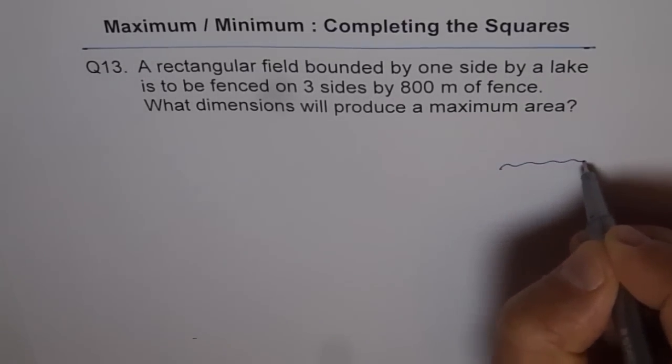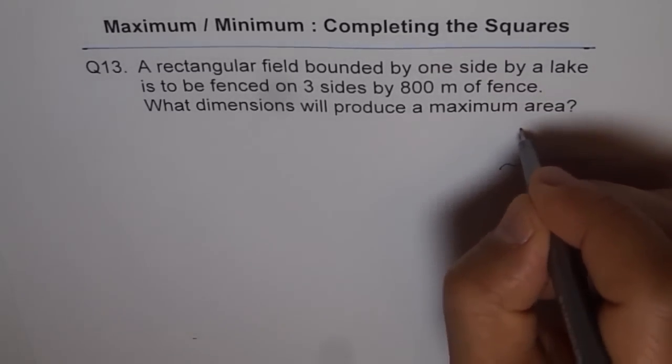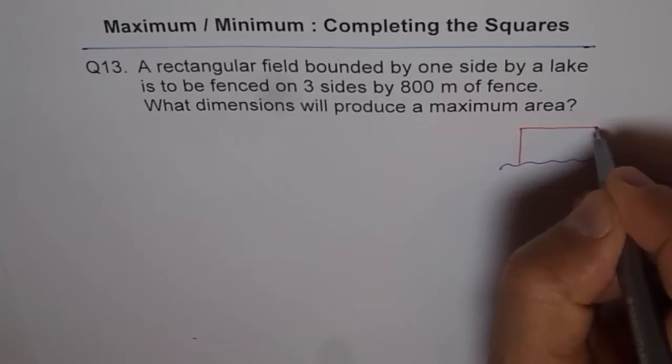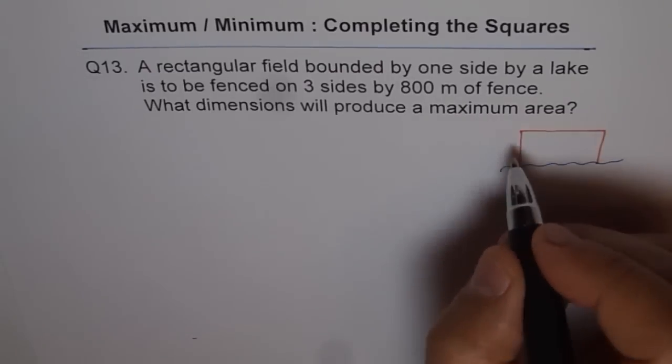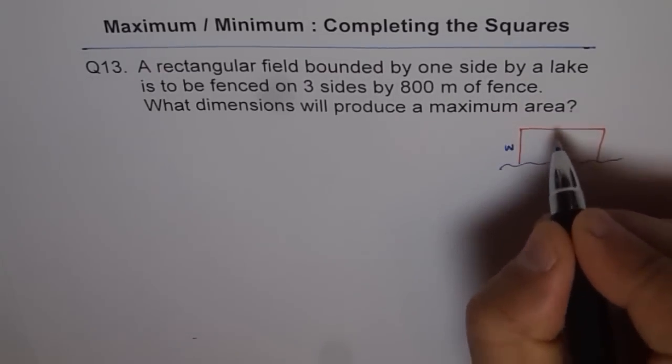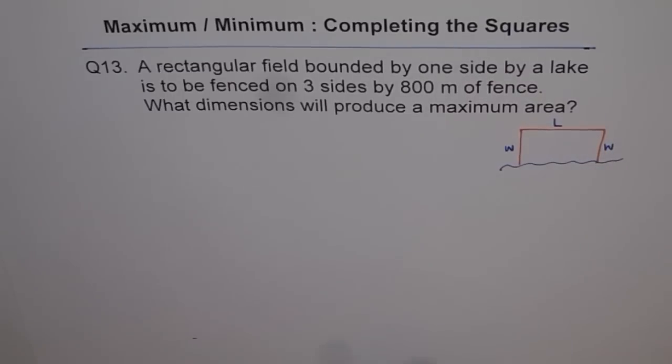So let's first draw a diagram. Let's see, this is a lake and that's the rectangular field which we have here and we have fencing on three sides. So let's first define our variables. Let's say the width of the rectangular field is W and the length is L. So this is also W since it is a rectangular field.